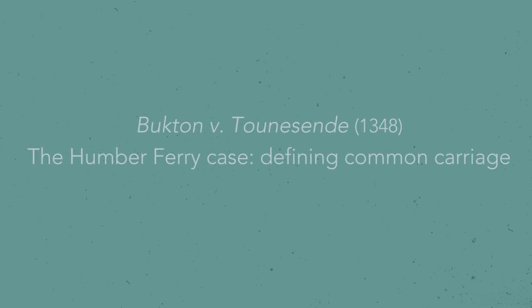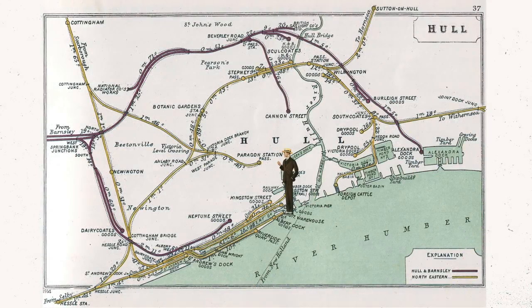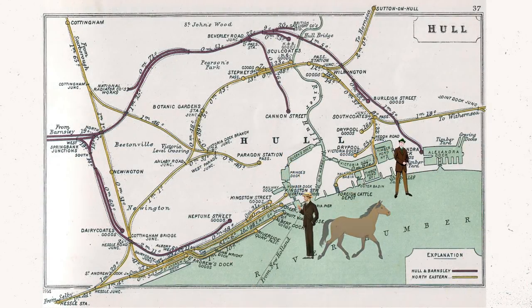Common carrier is not a new term. You can go back 600 years and see courts grappling with the question of who is and is not a common carrier. The ferryman's case: a man agreed to transport another man's horse, the horse died in transit, and courts had to determine — there was no written contract between them — where do the duties lie and who is responsible for the death of the horse?